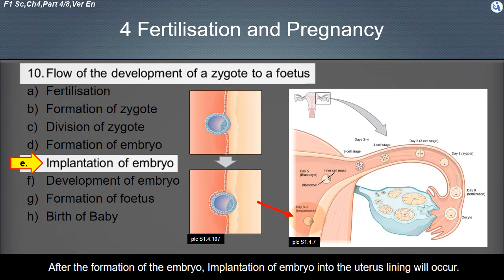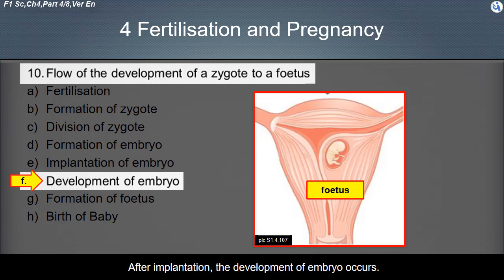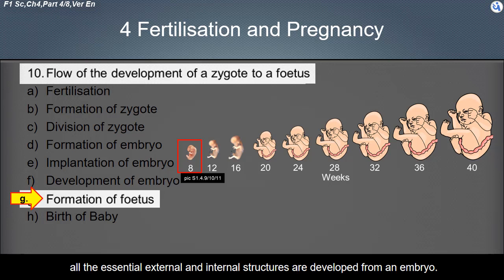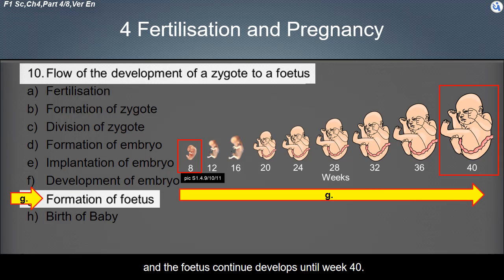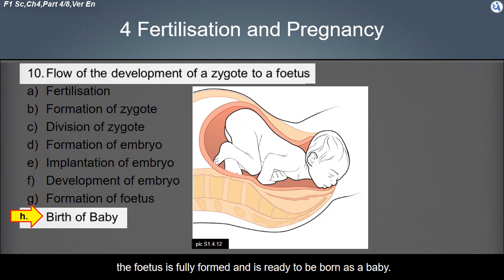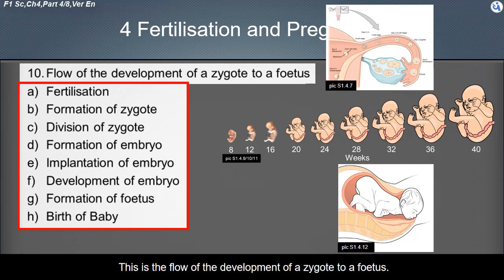After the formation of the embryo, implantation of the embryo into the uterus lining occurs. After implantation, the development of the embryo continues. By the end of the second month — week eight — all the essential external and internal structures are developed from an embryo, and the fetus is formed. The fetus continues to develop until week 40. The final stage is the birth of the baby: at week 40, the end of the nine-month pregnancy, the fetus is fully formed and ready to be born.